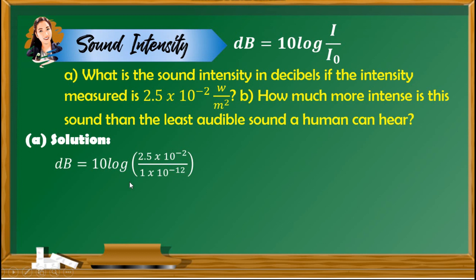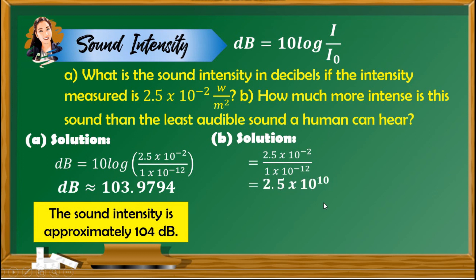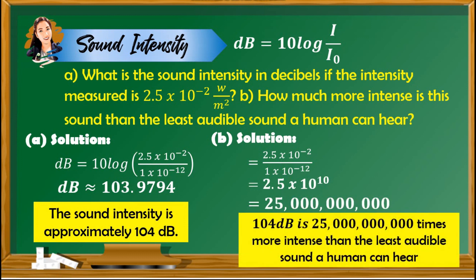Simplifying the formula with the given intensity, we get approximately 103.9794, so the sound intensity is approximately 104 decibels. For part B — how much more intense is this sound than the least audible sound a human can hear — we find the ratio I over I-sub-0, which is 2.5 times 10 raised to 10, equivalent to 25 billion. This means 104 decibels is 25 billion times more intense than the least audible sound a human can hear.